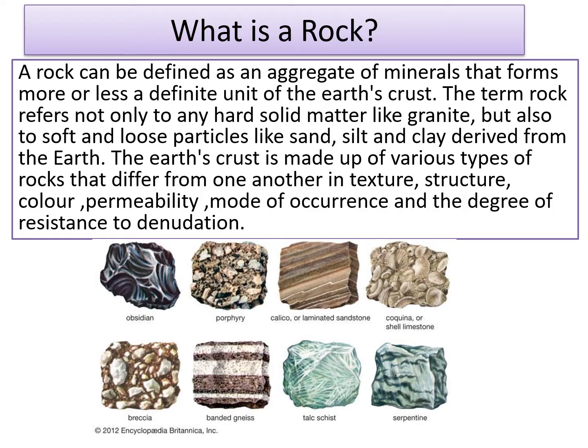Here permeability means whether any fluid like water can flow through a rock. If it can flow through a rock then the rock is permeable, otherwise the rock is impermeable. Resistance to denudation means how fast weathering occurs on that rock, because some rocks are soft so breaking down of these rocks takes place sooner as compared to harder rocks, which take a lot of time to break down.